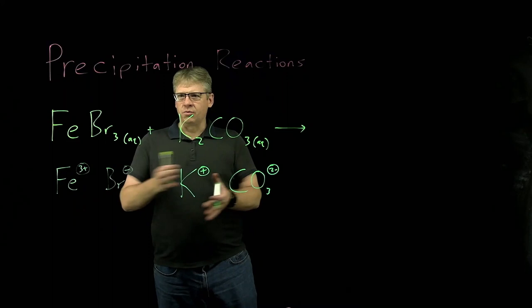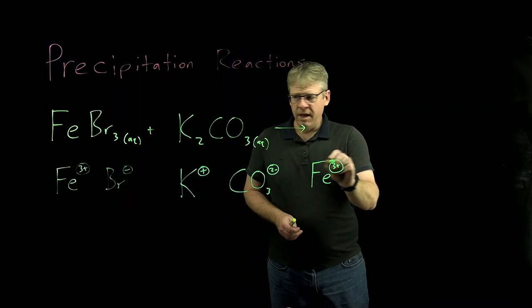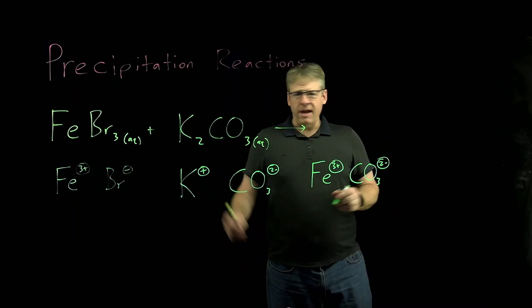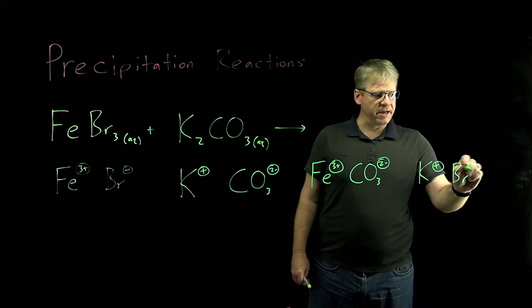Now let's swap partners. The iron-3+ is going to be paired with the carbonate, and the potassium is going to be paired with the Br-.